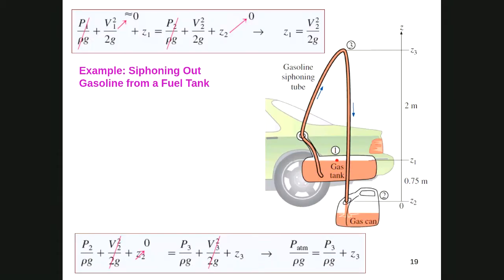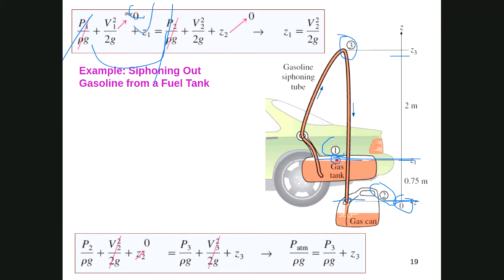Application 3 — siphoning: taking gasoline from a car tank by raising the pipe to point 3. Consider three heights z₁, z₂, z₃. Taking z₂ as reference. Apply Bernoulli between points 1 and 2: point 1 is the surface (pressure atmospheric, velocity ≈ 0, height z₁); point 2 is the pipe exit (pressure atmospheric, velocity v₂, z₂ = 0). Since both pressures cancel, we get v₂ = √(2gz₁).